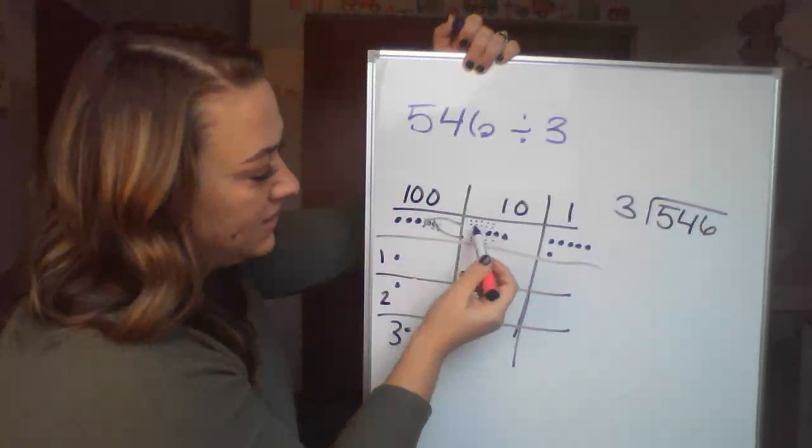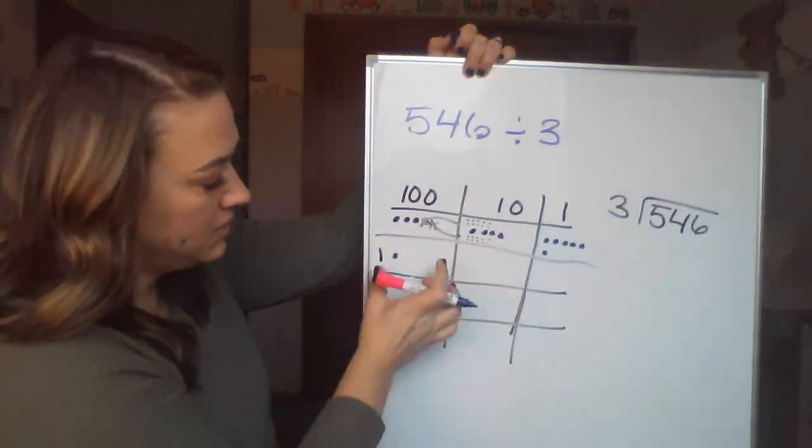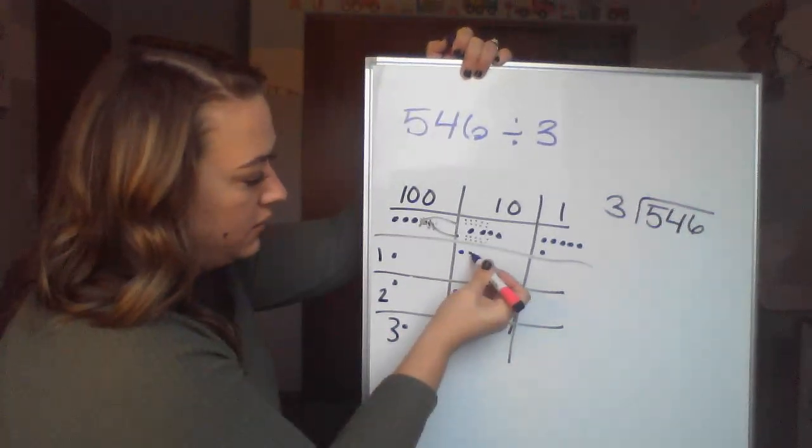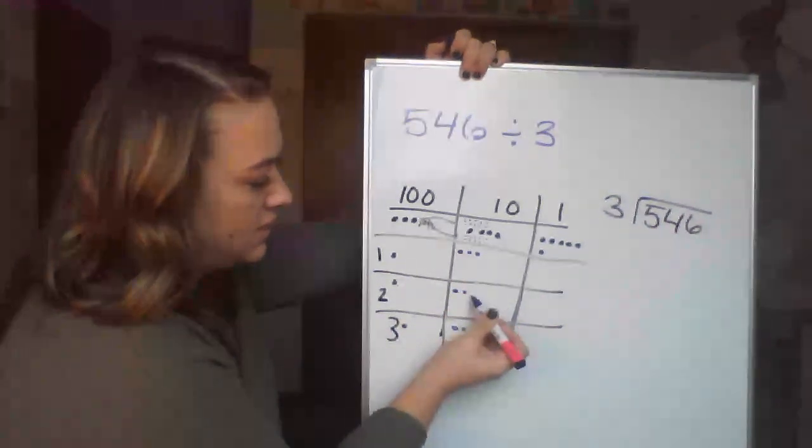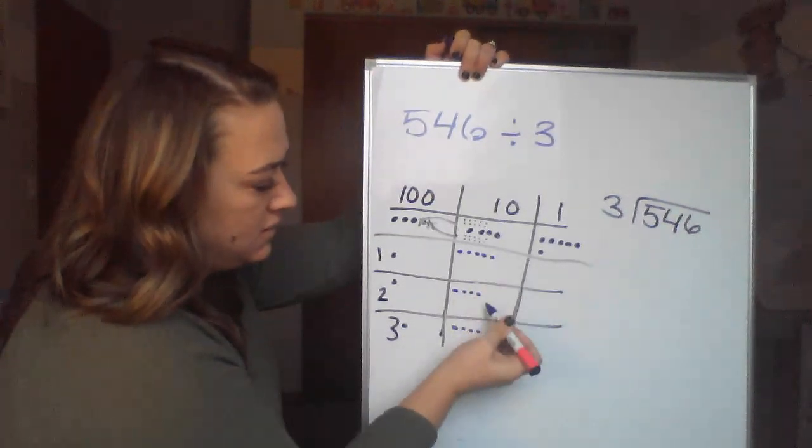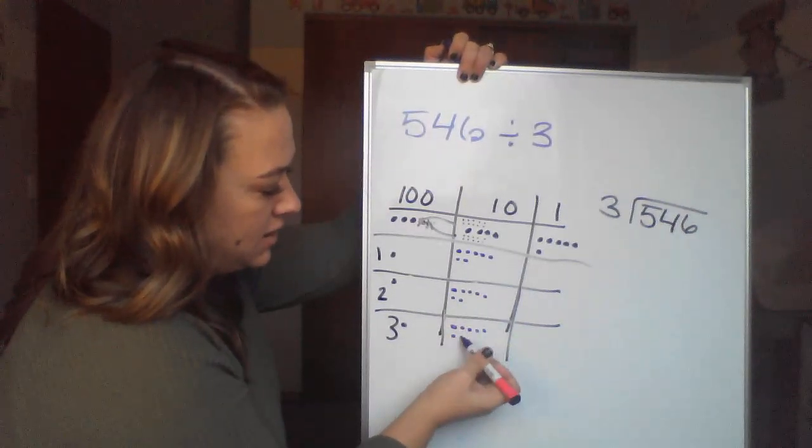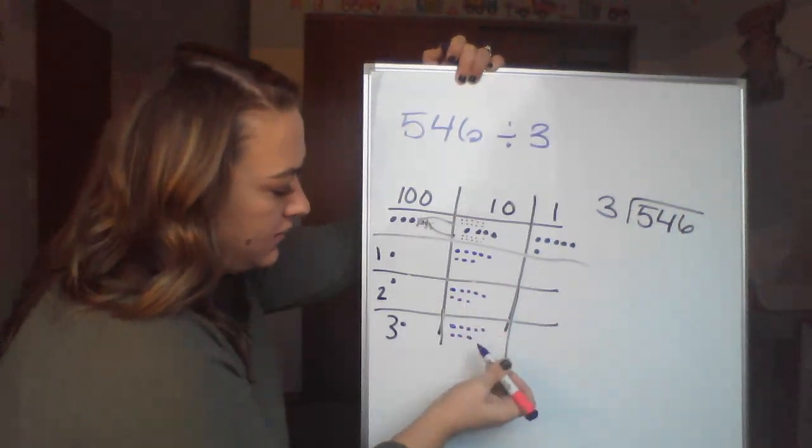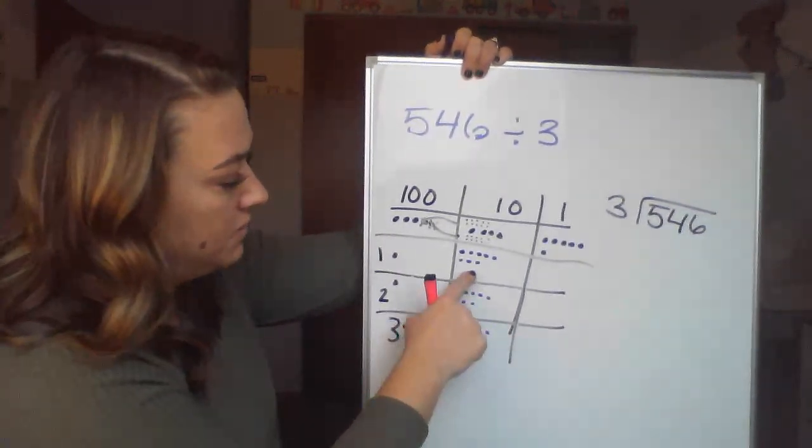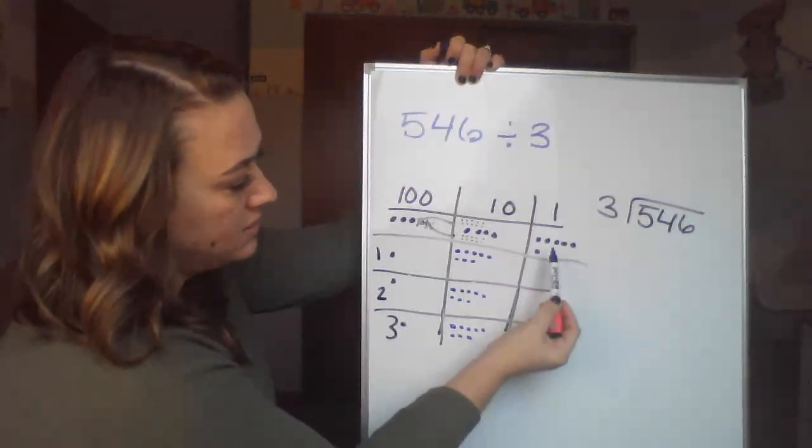So we have 24 in here right now that we're going to divide equally between 3 groups as best we can. We are able to equally distribute that. So we have 100, we've got 8 tens.